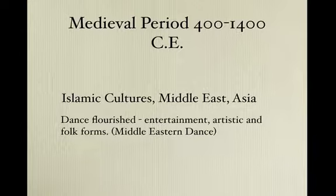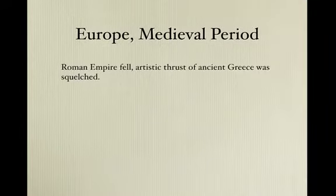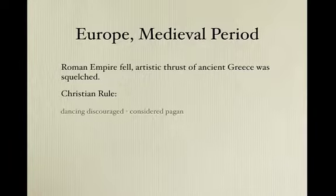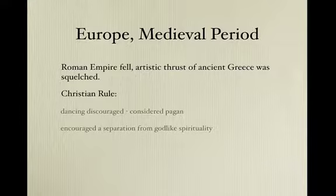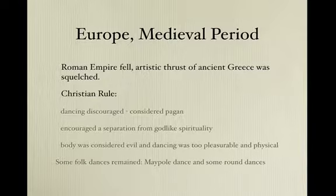Shifting to the medieval period — 400 to 1400 CE — in Islamic cultures, the Middle East, and Asia, dance flourished as entertainment with both artistic and folk forms. However, in Europe things were different: the Roman Empire fell and the artistic thrust of ancient Greece was squelched. Christian rule discouraged dancing, considering it pagan and separating people from spiritual devotion. The body, movement, and sensation were considered evil, and dancing was thought too pleasurable. Some folk dances like maypole and round dances endured, but the arts were largely suppressed.